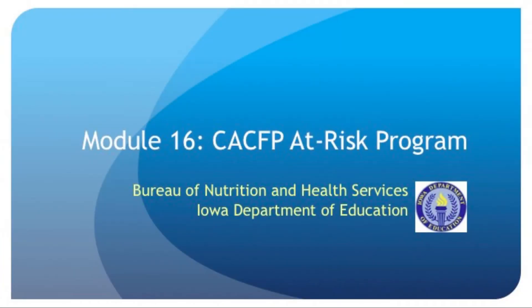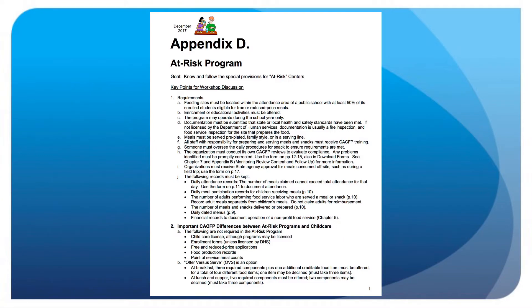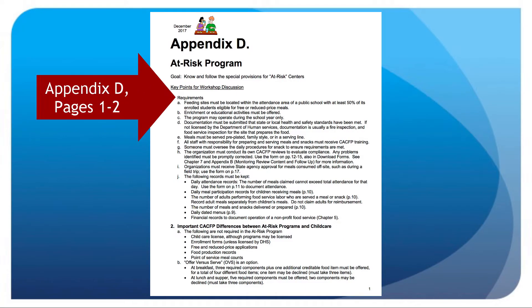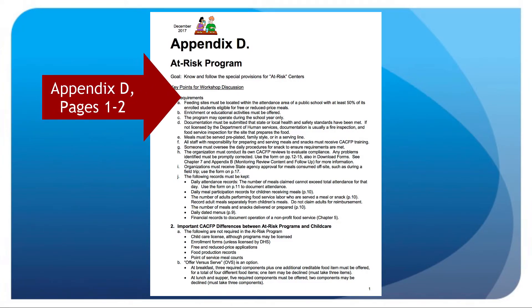Welcome to Module 16, which covers special provisions for the CACFP At-Risk Program. This program offers federal funding to after-school programs serving meals or snacks to children in low-income areas. The information can be found in Appendix D of the CACFP Administrative Manual.